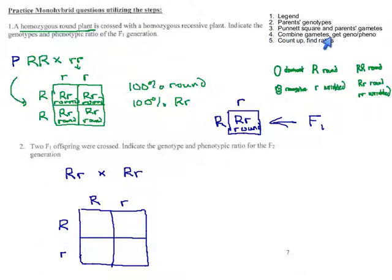Step four, combine the gametes, meaning what combination do we get here? Remember, this was big R from one parent, big R from the other one. So the kid is big R big R. In this cell, we get big R from one, little r from the other. In this cell, little r from one, big R from the other. But remember, dominant first. It doesn't matter which parent it came from. And here, little r little r.